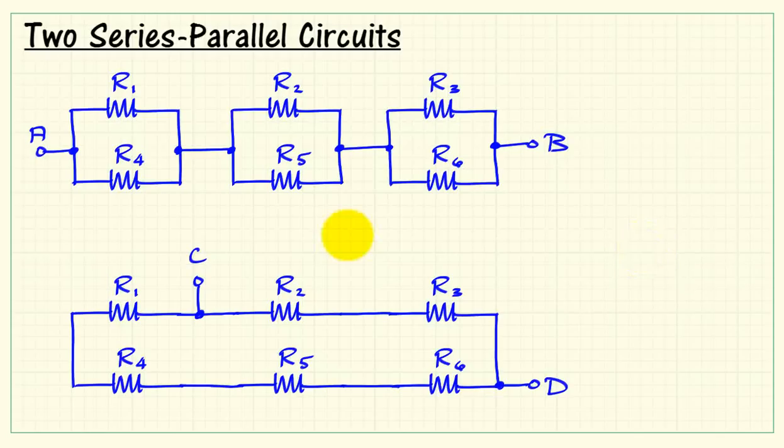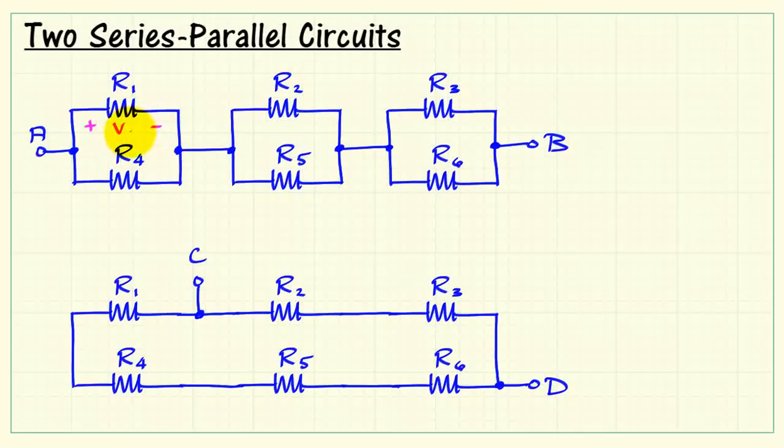Here's the calculations for the equivalent resistance of two series-parallel circuits. Note here that we've got a voltage that appears across each resistance, call that V1 and V2.